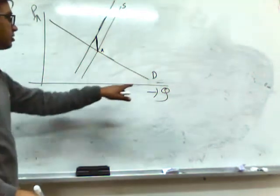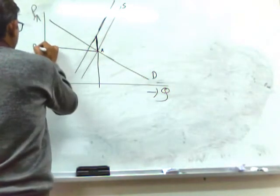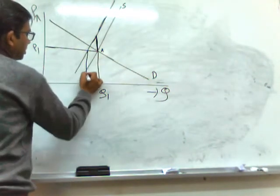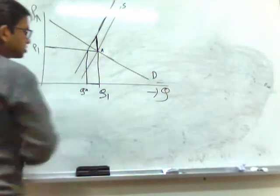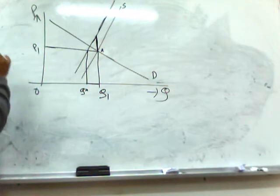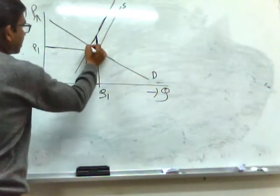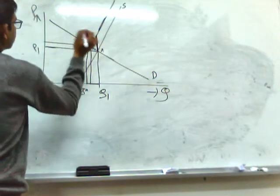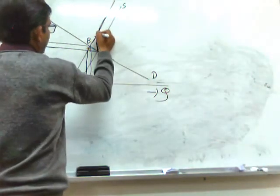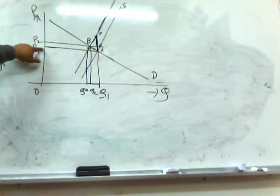Initially, equilibrium point A is determined by the intersection of demand curve D and supply curve S. Price is OP1 and market clearing output is OQ1. After the tax, there is a supply shortage or excess demand to the extent Q*Q1. As the price starts to rise, there is contraction of demand and extension of supply until a new equilibrium point B is reached with price OP2. Quantity falls and price rises. Total burden of tax is AF, and AG indicates the burden transferred to consumers, which equals the price rise P1P2.